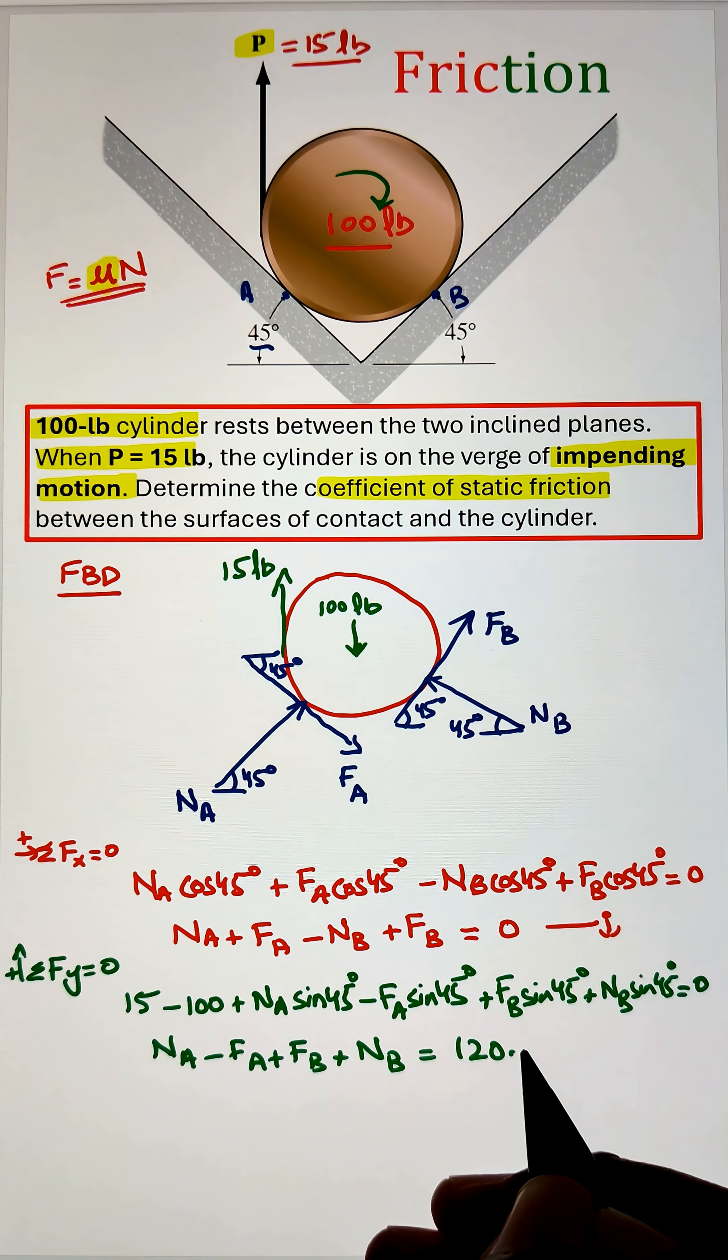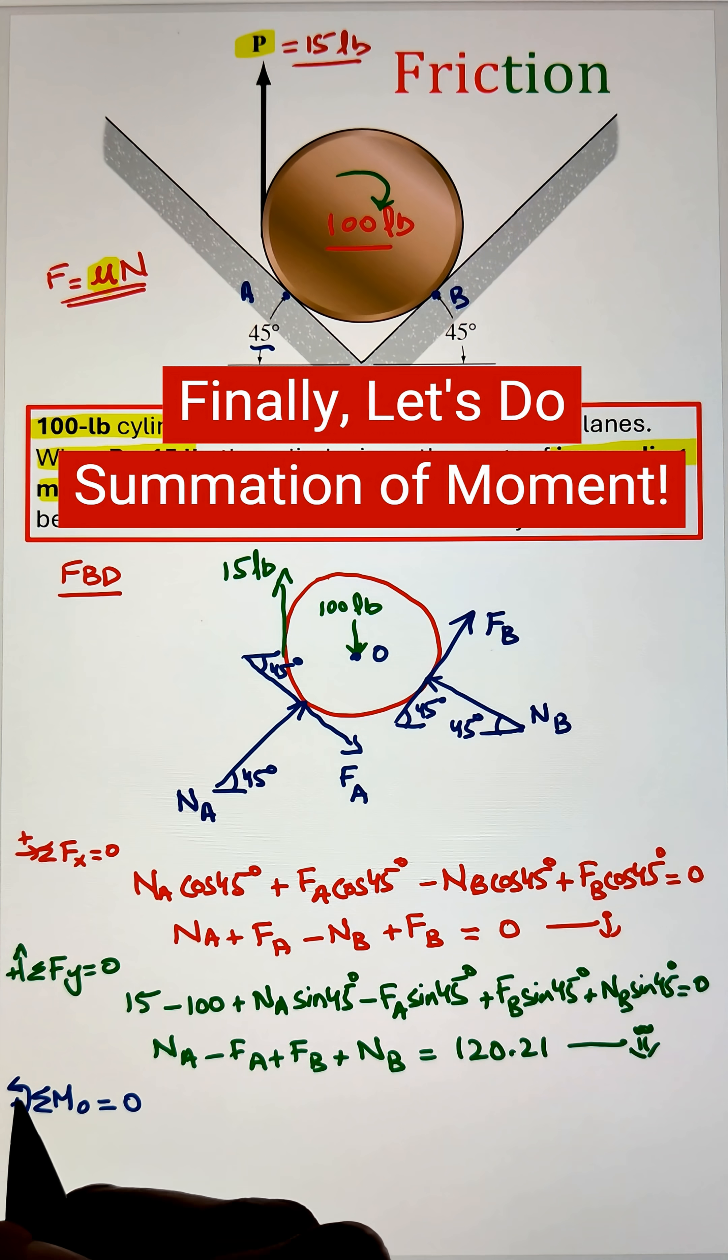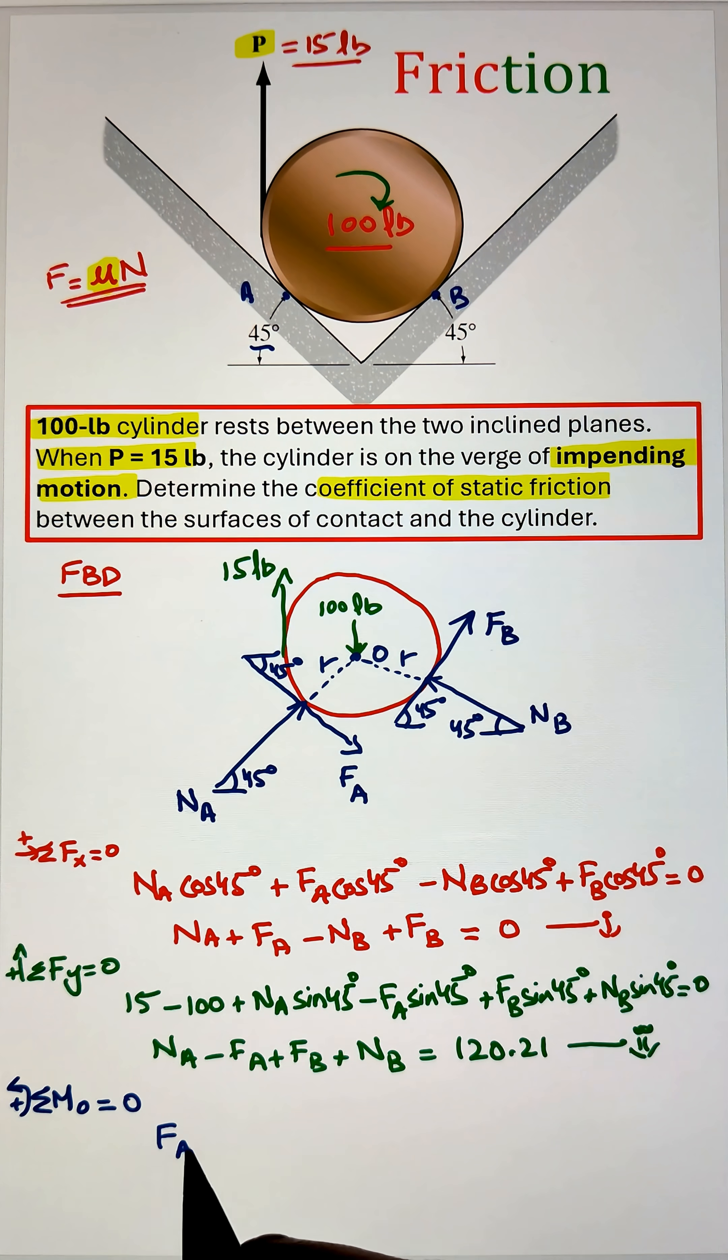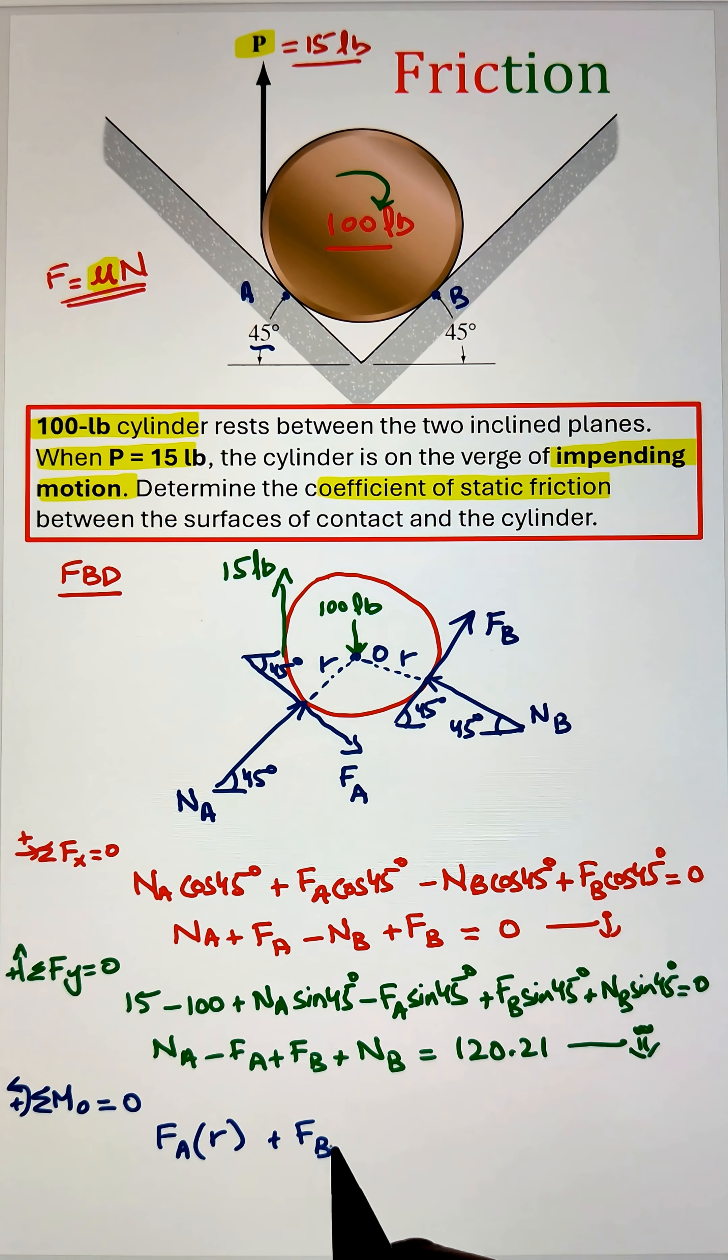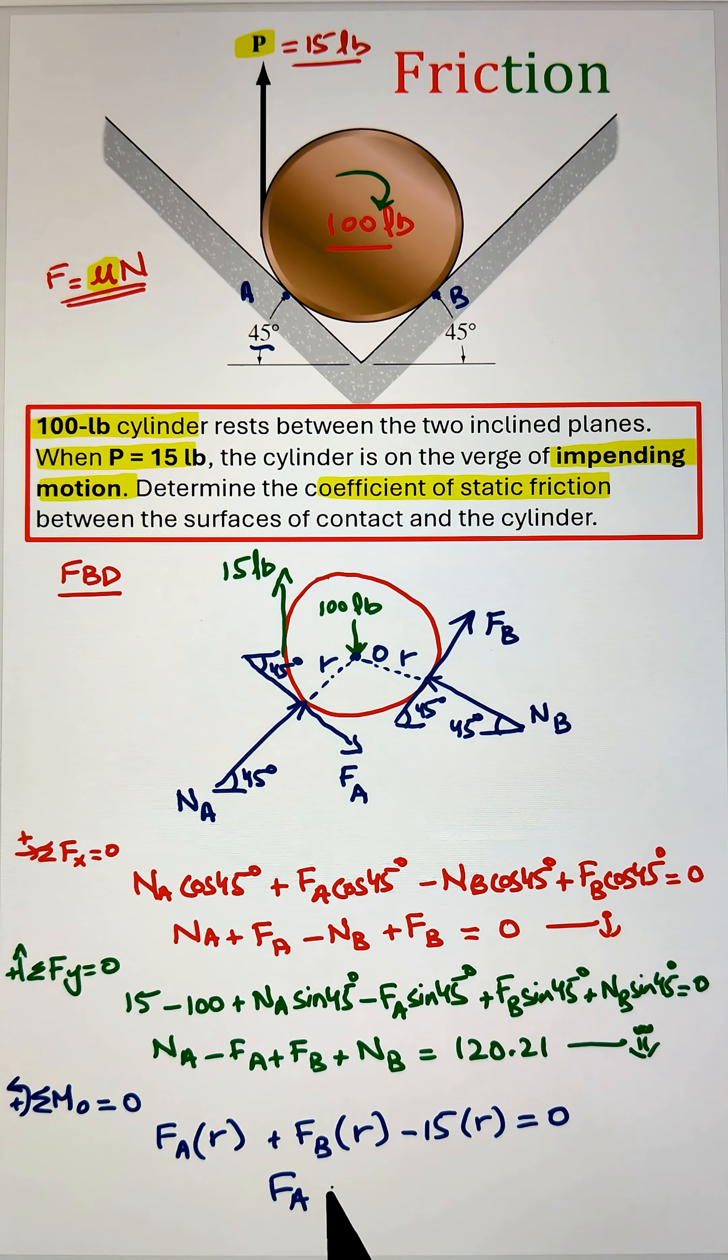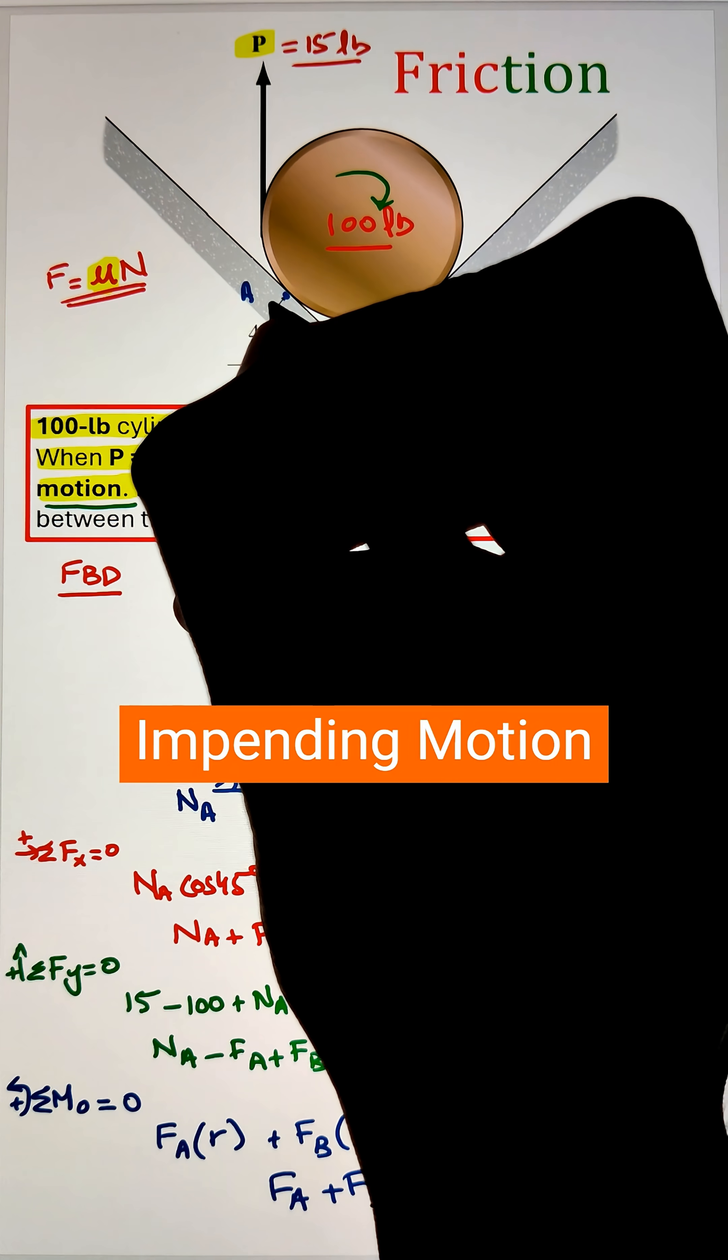Finally let's apply the summation of moment at the center of the cylinder. Doing that it will eliminate our force N A and N B as they won't create any moment with respect to point O as they are passing through the line of action of point O. Similarly the 100 pound force won't create any moment. The only forces that will create the moment are F A with a moment arm of R that is going in our counterclockwise direction. Also F B with a moment arm of R also is going in the counterclockwise direction whereas the 15 pound load is going to make our clockwise moment. Simplifying we get our equation 3.